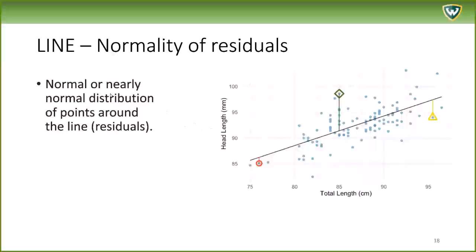Normality of residuals. We have normal or nearly normal distribution of points around the line. The residuals are the difference between each particular point and the line. Imagine a graph where the points are very close to a line. In this situation, the residuals are going to be low because the difference between each point and the line is small. But we can have other situations where the points are kind of far from the line, a lot of them, so you have a high residual.